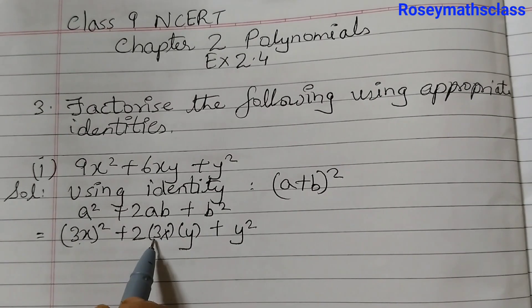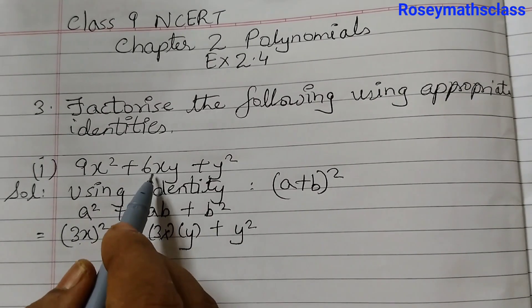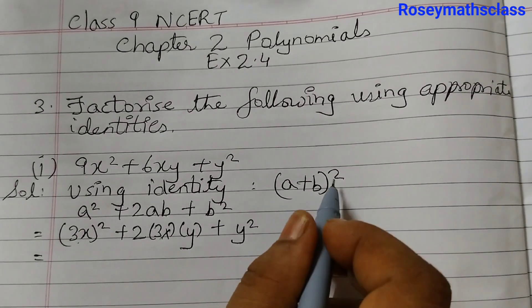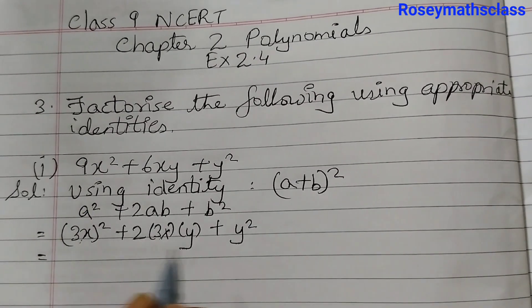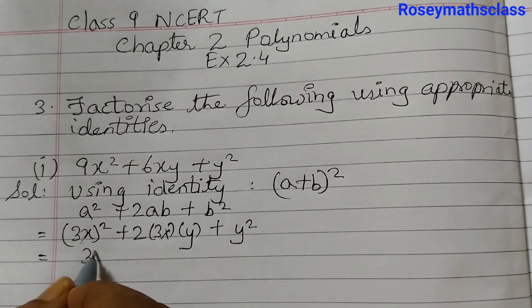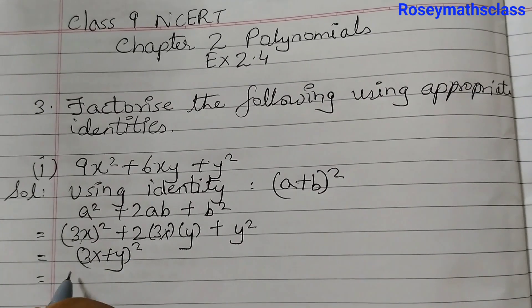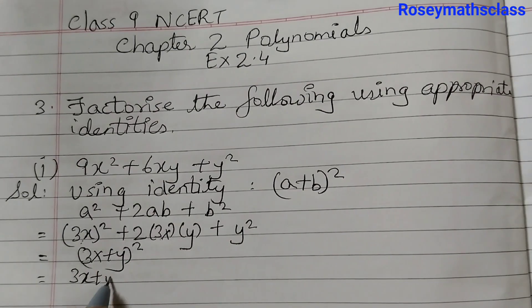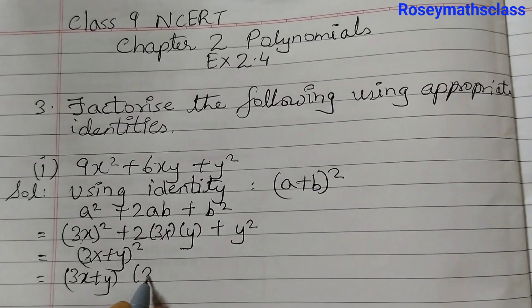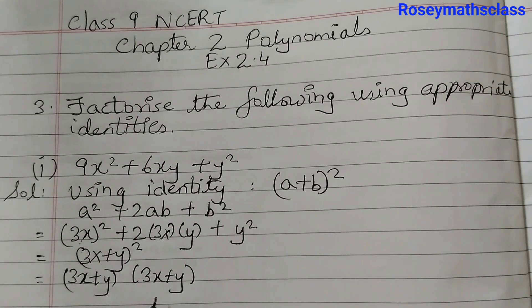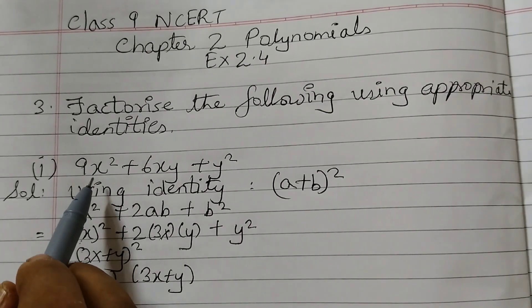We can check: 2 times 3 is 6, 6xy. That's what we have got here, which equals to a plus b whole squared. That means 3x plus y the whole squared. And we can write this as 3x plus y into 3x plus y. So these are the factors of this given polynomial.